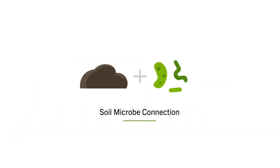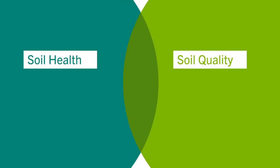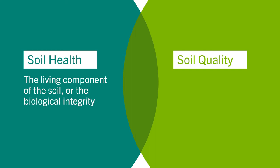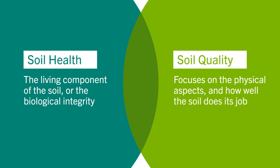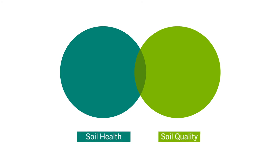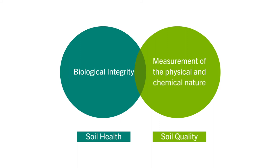Now I mentioned the soil microbe connection — that's soil health. Soil health and soil quality go hand in hand, two different terms, but it is important to keep in mind that they're more like a Venn diagram. One focuses on the living component of soil — the soil health and biological integrity — and the other focuses on the more physical aspects, or soil quality, and how well that soil does its job. So as I've mentioned, two different concepts: soil health and soil quality, with some subtleties to how they're different.